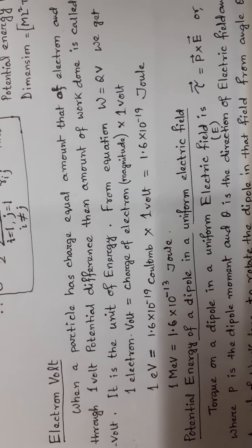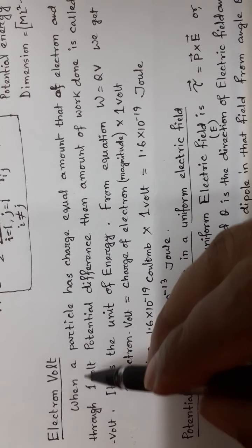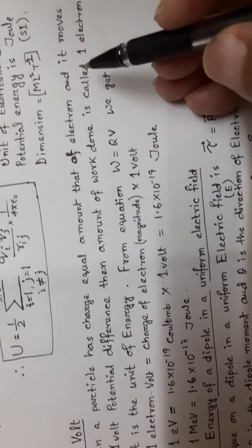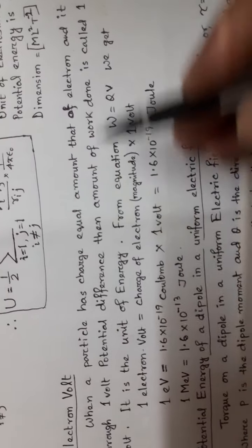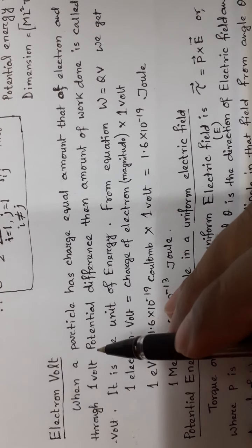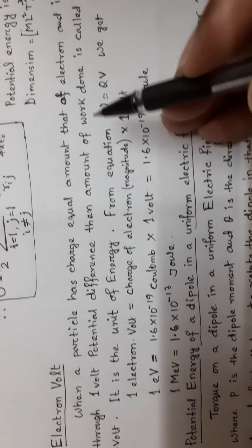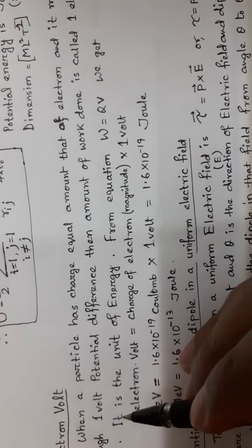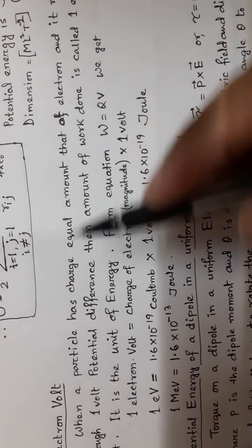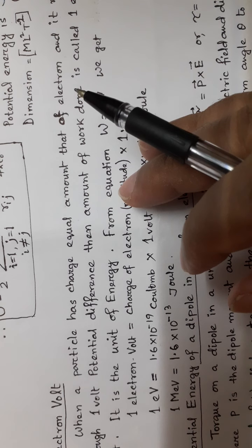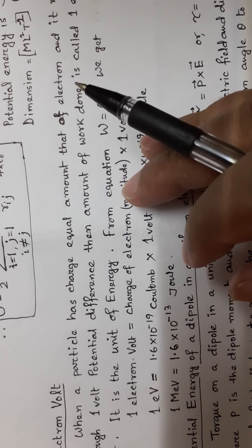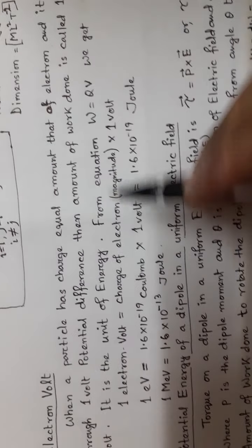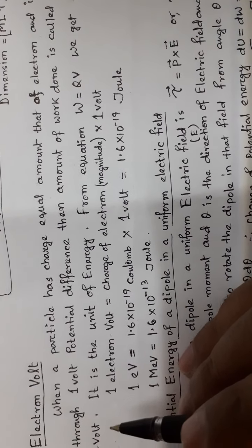Electron volt is defined as the unit when a particle moves through 1 volt potential difference. The amount of work done in this process is the unit. This work done is one electron volt.